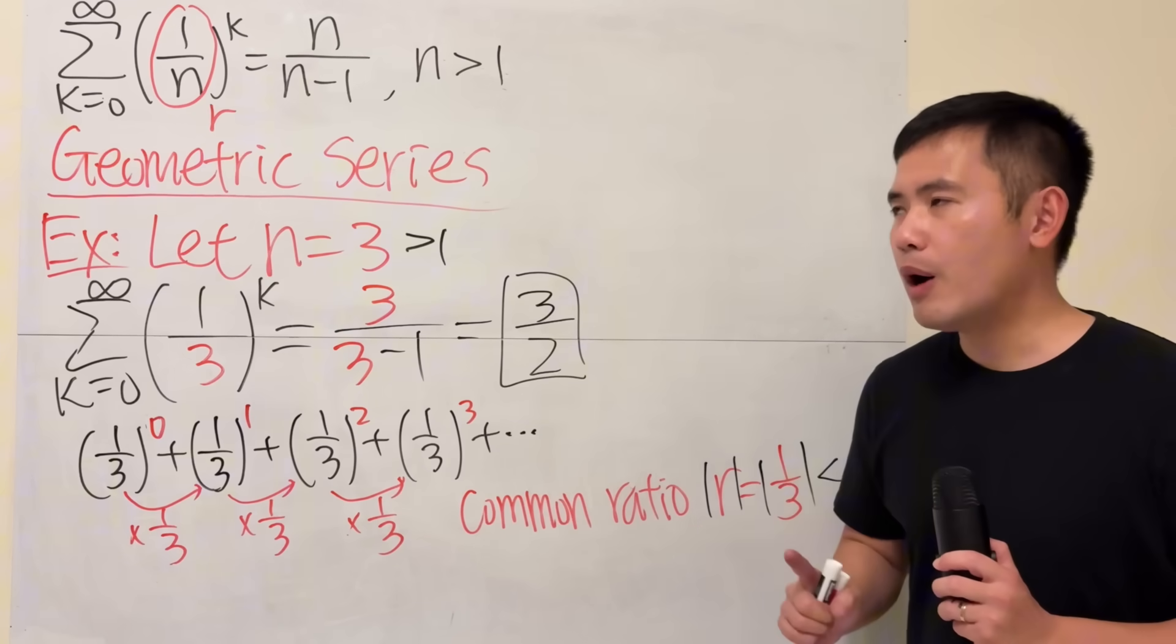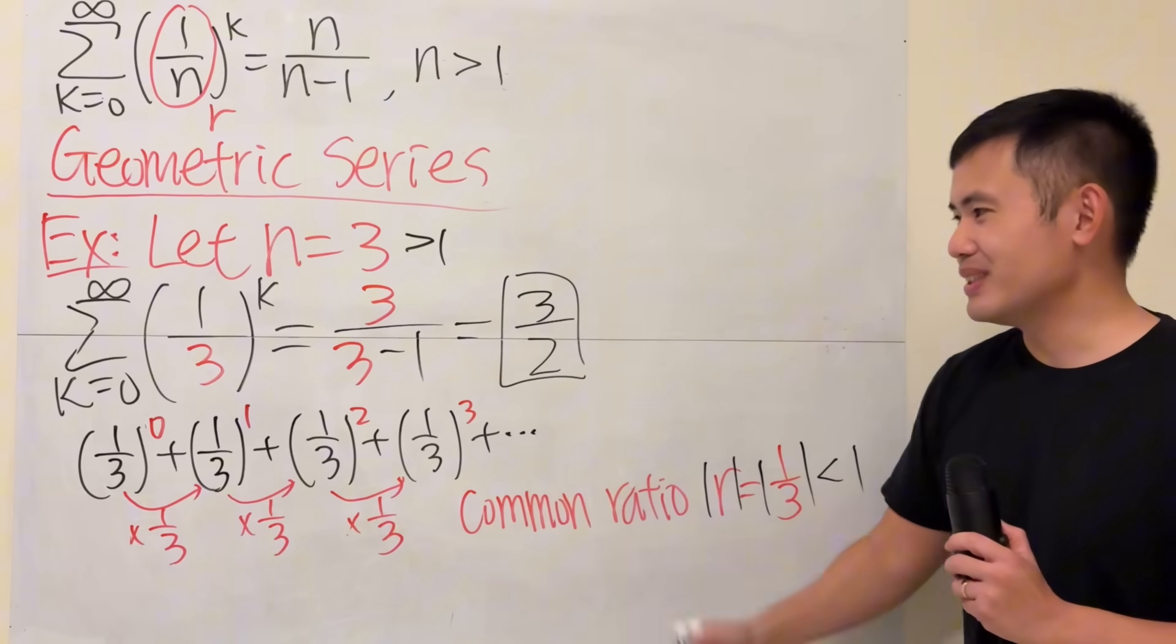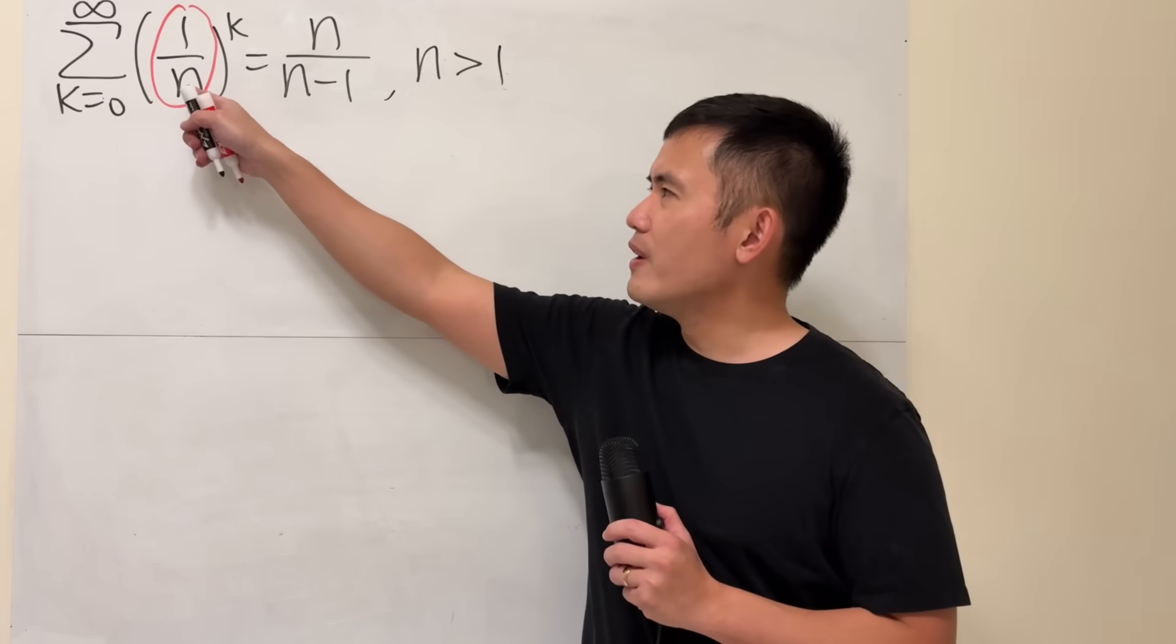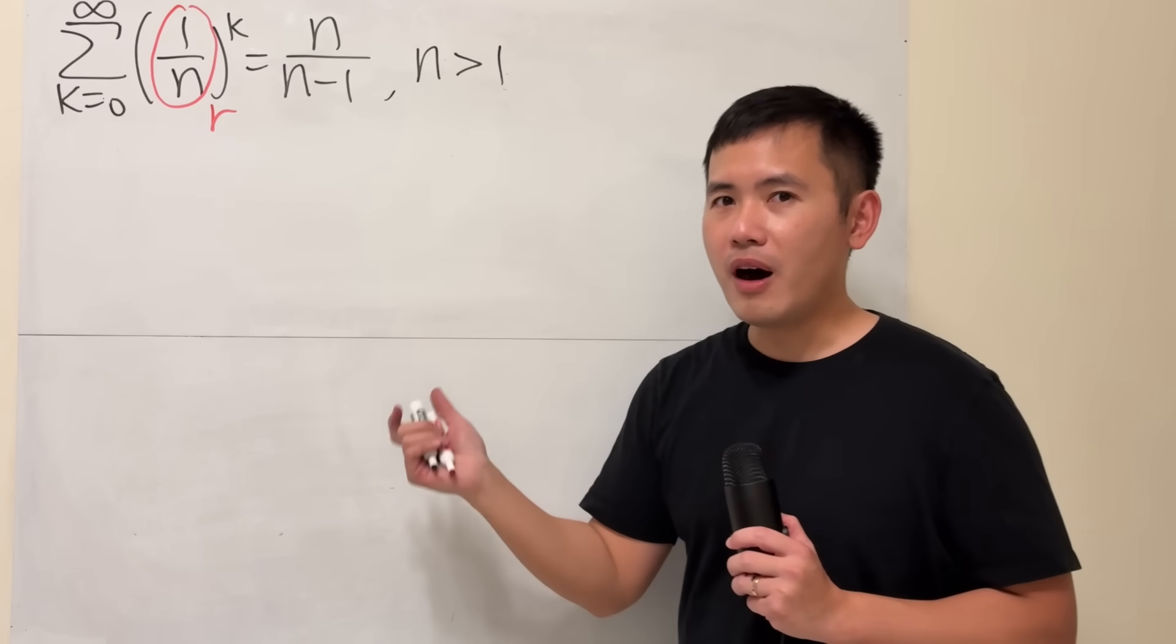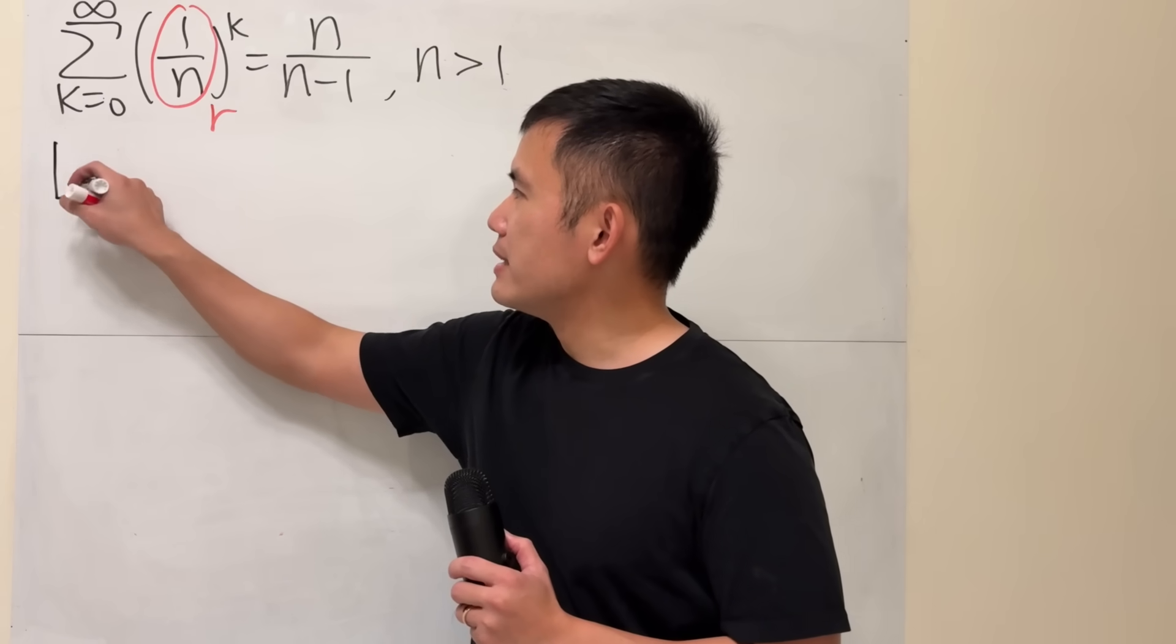Now, how are we going to show this formula is correct? Let's do it. So right here, instead of 1 over n, I'm actually going to be using r. It's easier to write that way. So I'm going to start off by saying, let,